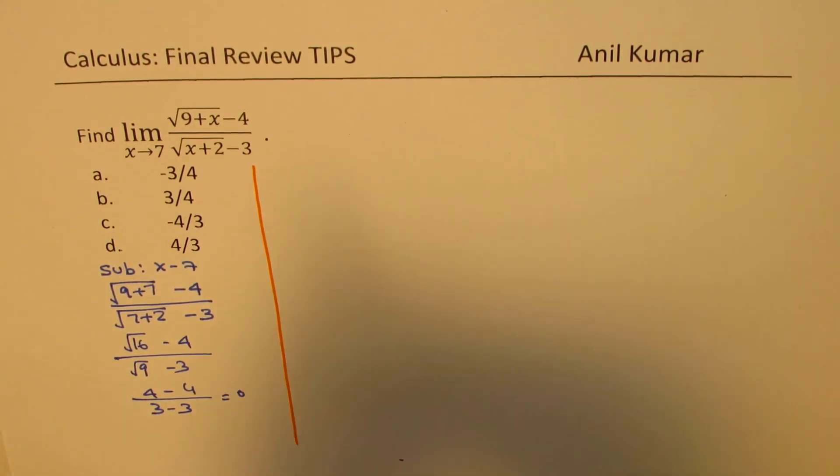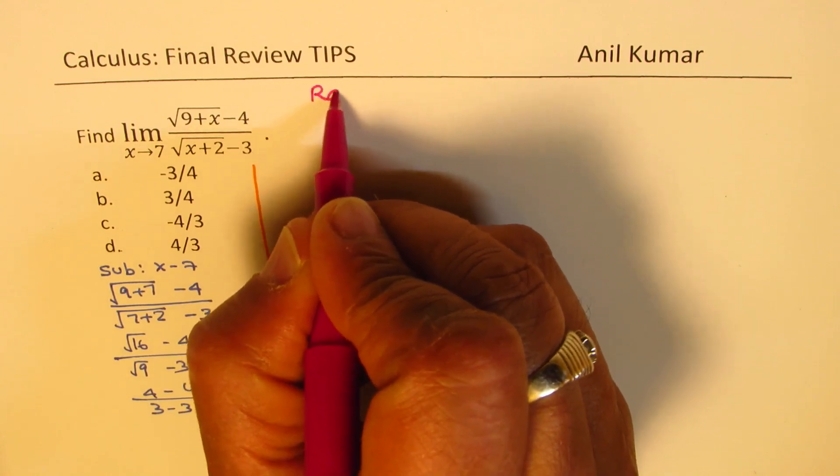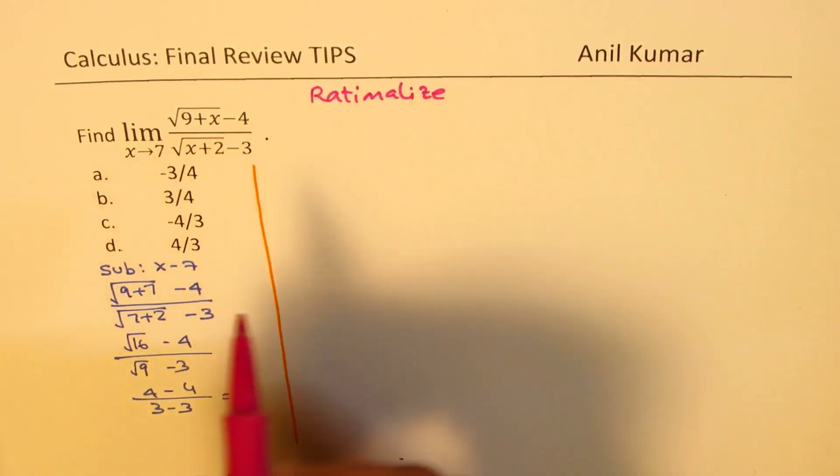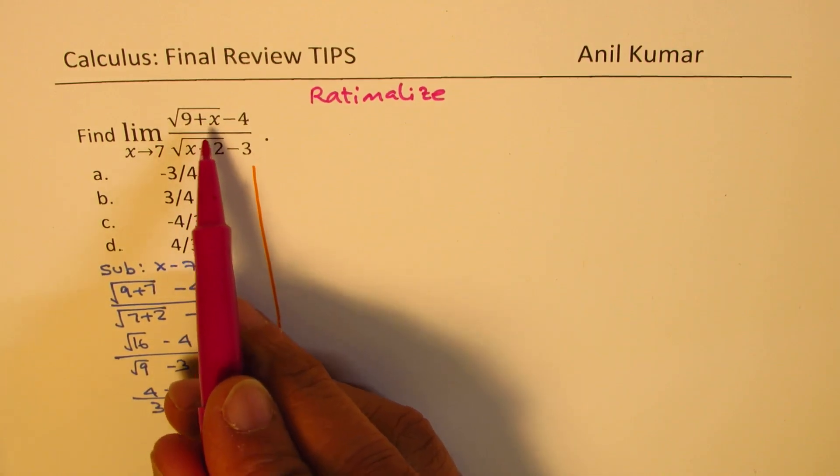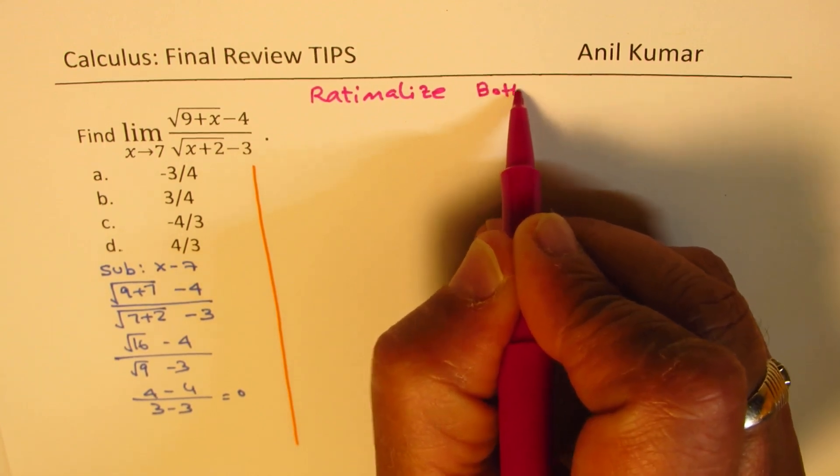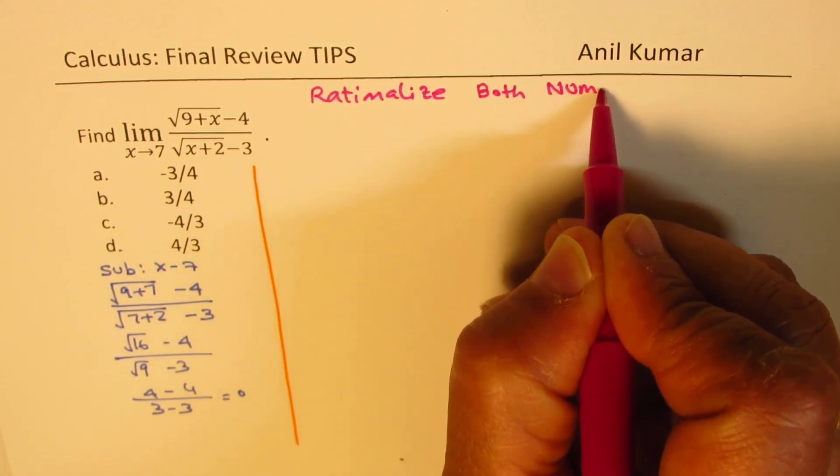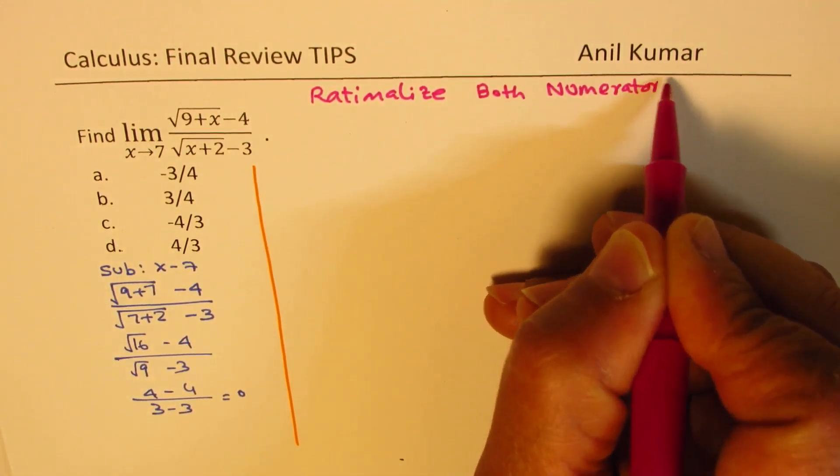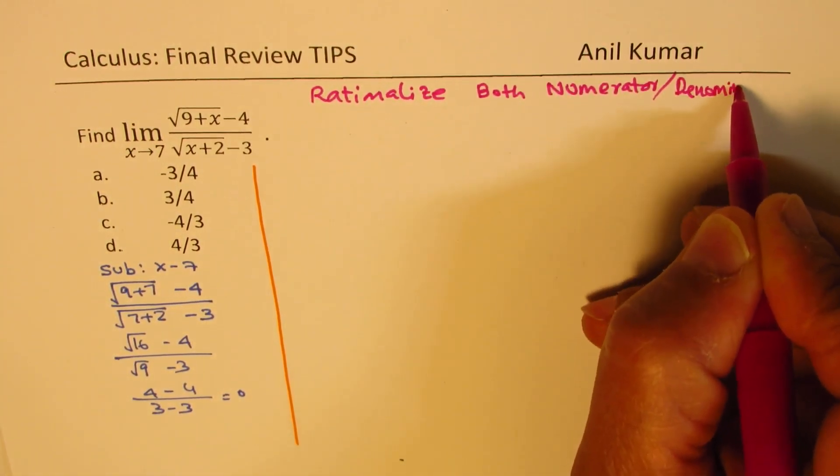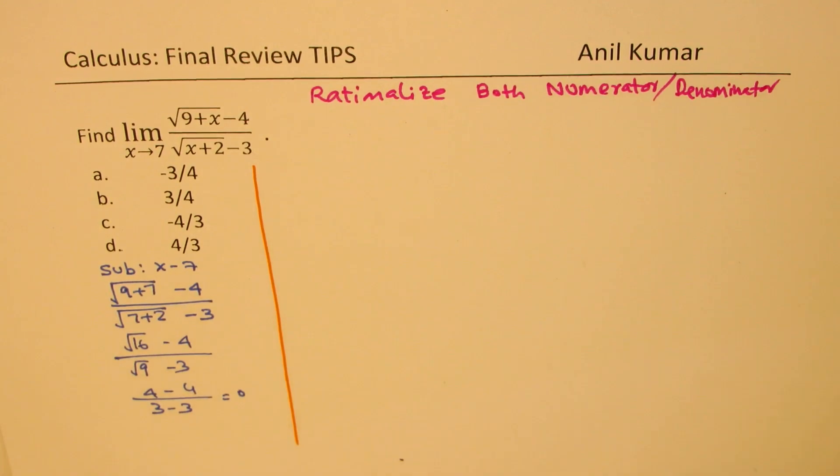Now in this case, what should we do? As you know, we are going to rationalize. Now since we have square root terms in both numerator and denominator, we are going to rationalize both numerator and denominator. So let's do it and then find the solution.